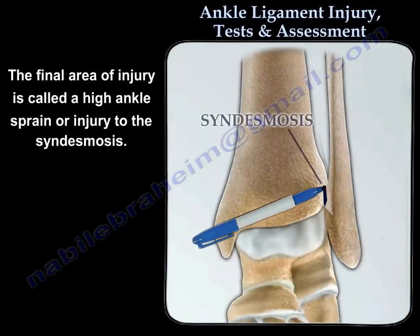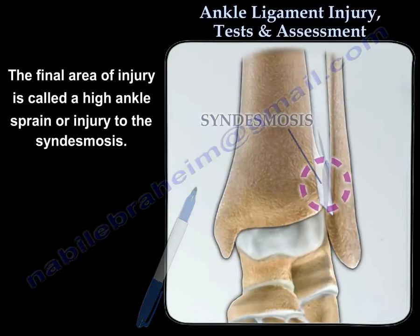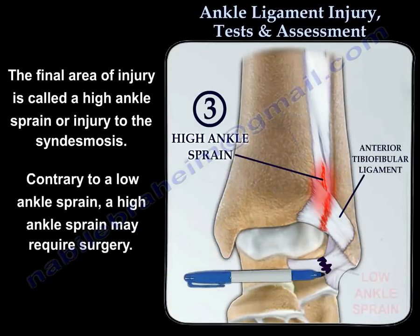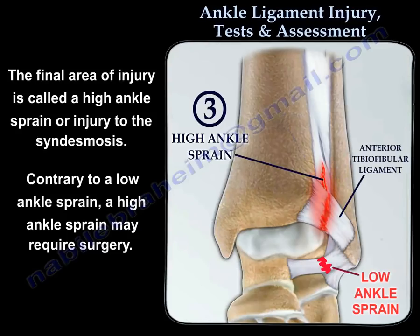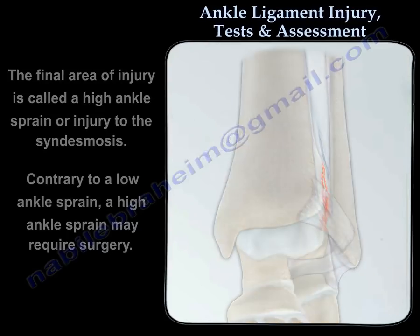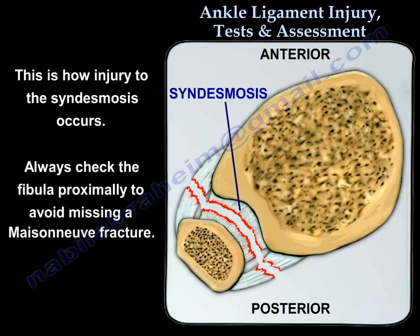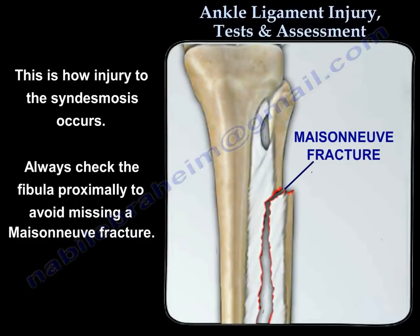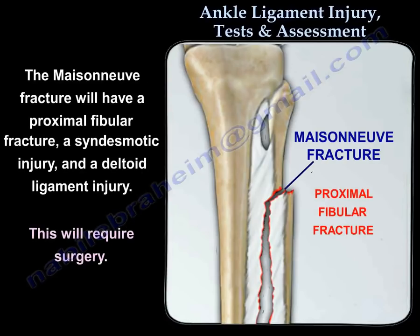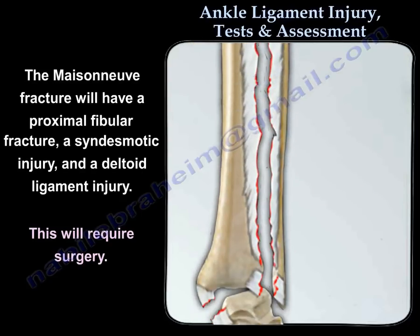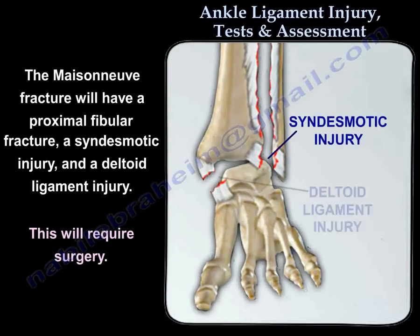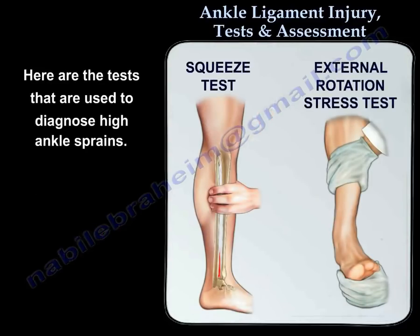The final area of injury is called a high ankle sprain or injury to the syndesmosis. Contrary to low ankle sprain, a high ankle sprain may require surgery. Always check the fibula proximally to avoid missing a Maisonneuve fracture. The Maisonneuve fracture will have a proximal fibular fracture, a syndesmosis injury, and a deltoid ligament injury, and it will need surgery.